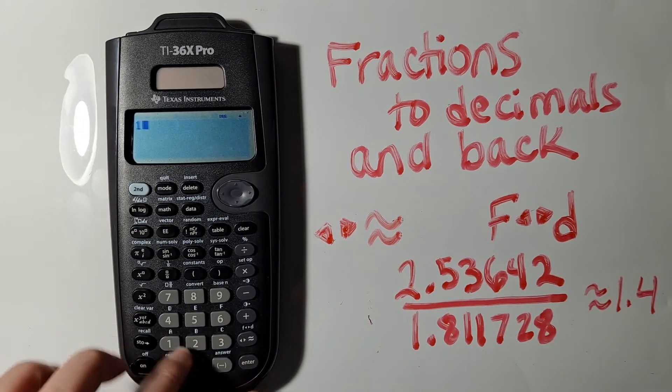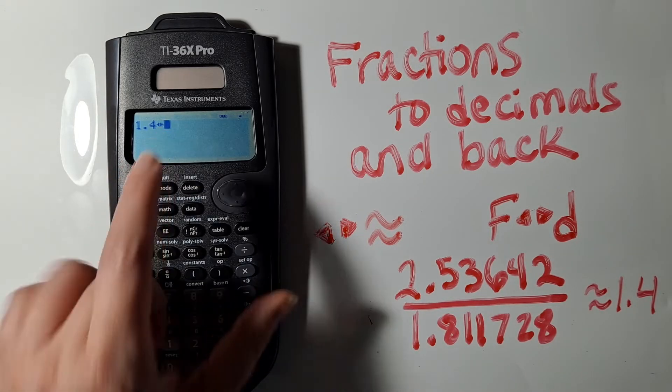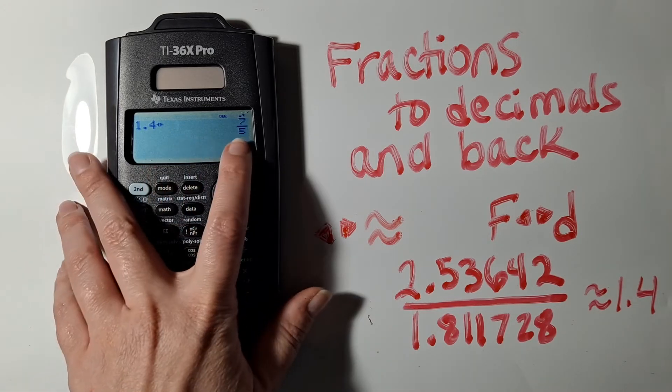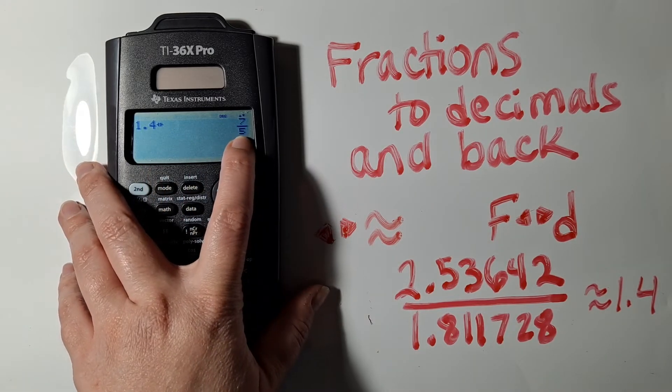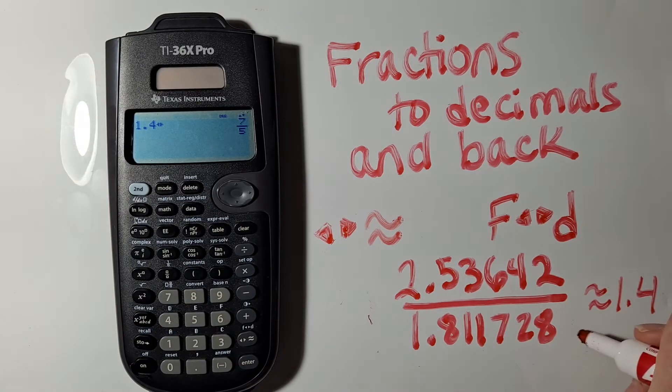So I can type in 1.4 and then I can hit this approximately equal to button. I can see it just displays some back and forth arrows on my screen. I can hit enter and now it tells me that it's 7 fifths, so it's approximately equal to 7 fifths.